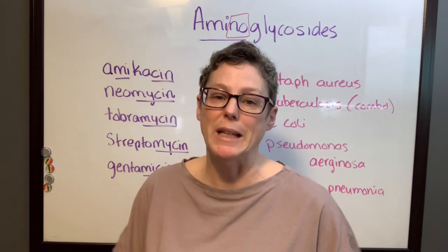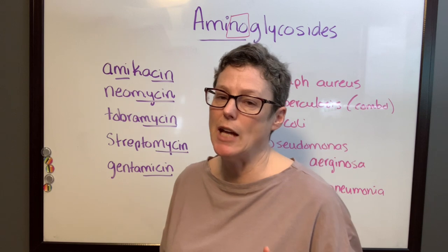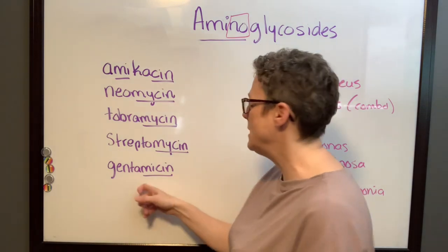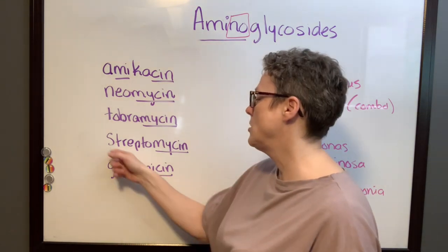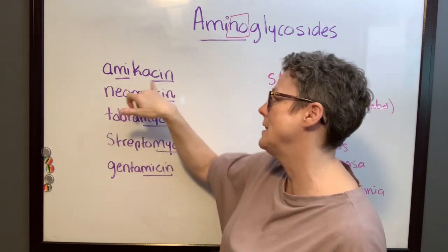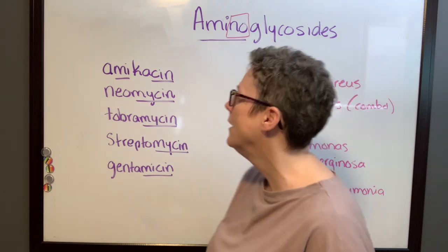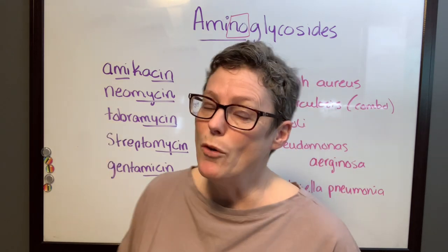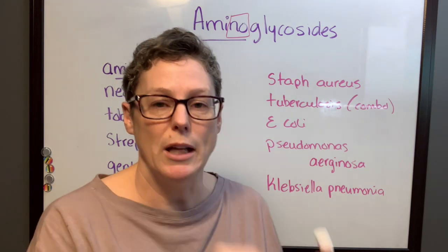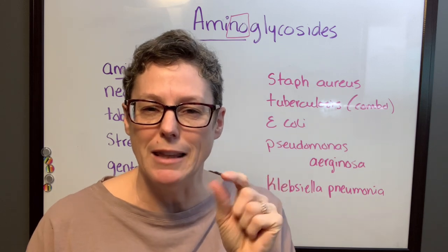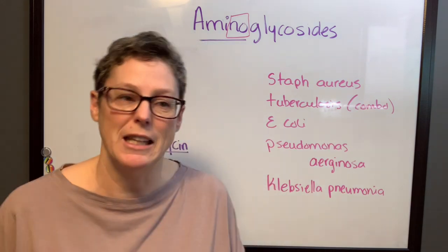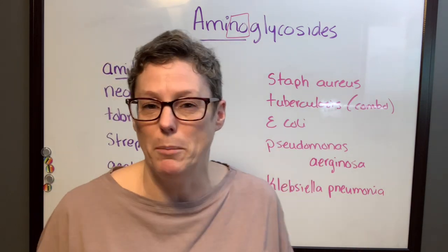Aminoglycosides are an easy category to identify because the drug names all share a similar suffix — they end in -mycin. Examples include gentamicin, streptomycin, tobramycin, neomycin, and amikacin, where the -mycin is embedded in the word. Think of ants when it comes to aminoglycosides — ants are small and when they bite they cause itchy rashes, just like one side effect of aminoglycosides: hypersensitivity reactions resulting in a rash.